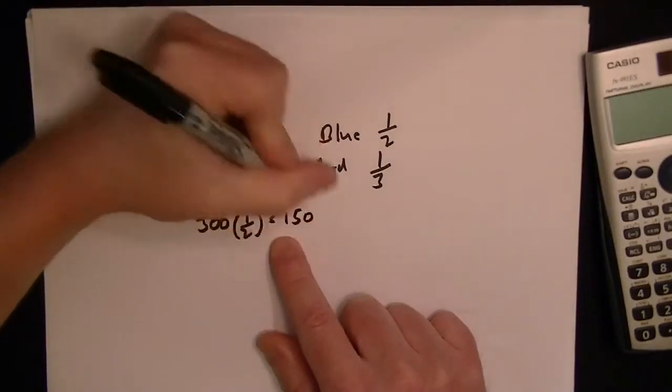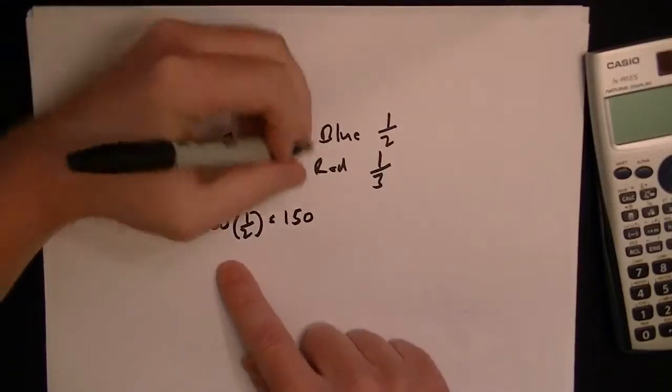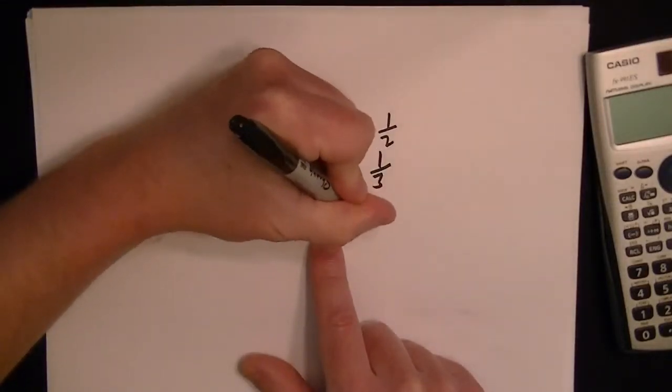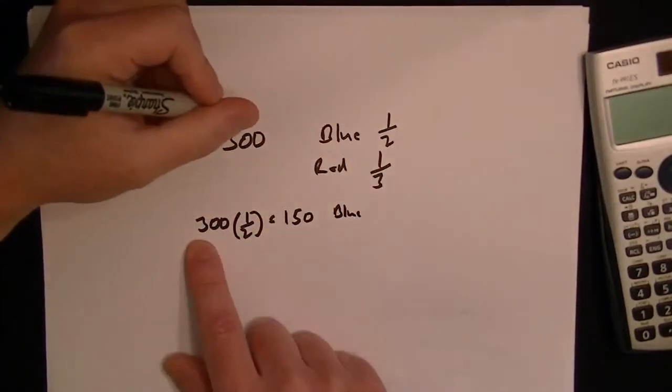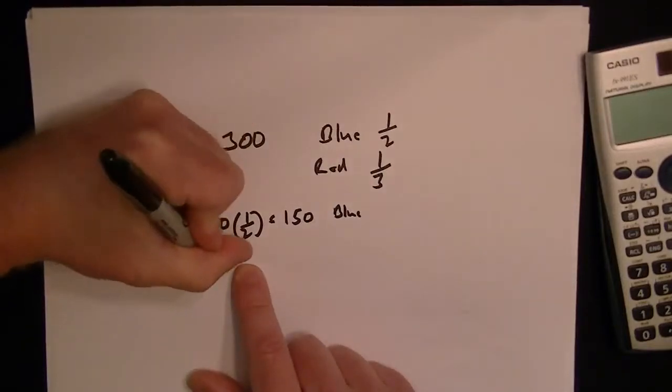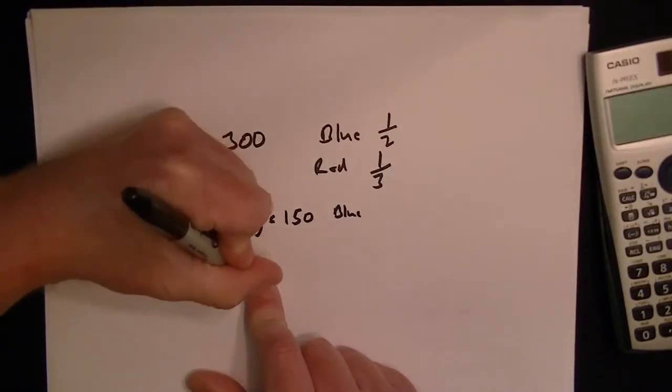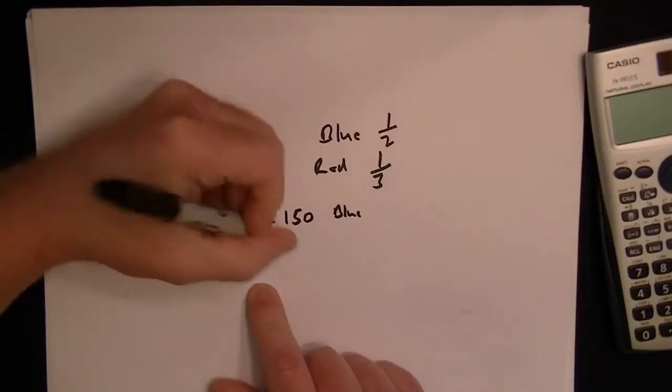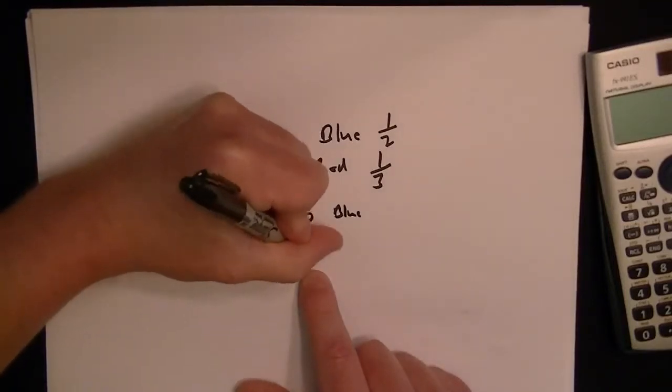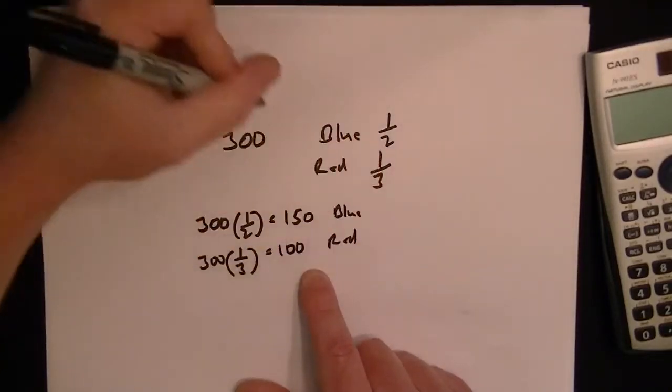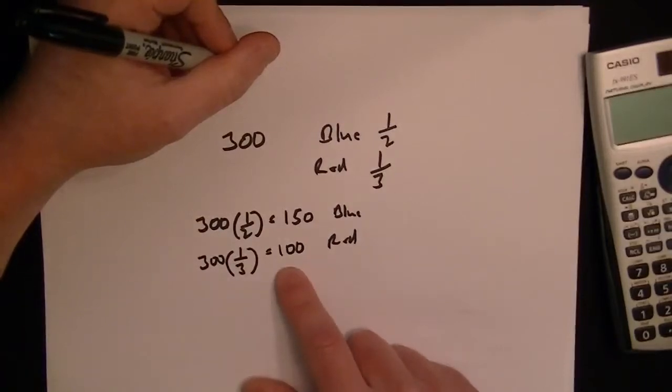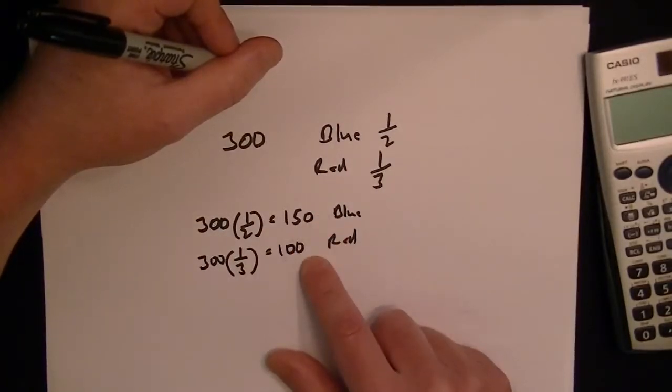150, because 150 is half of 300. So that's the blue. Then, the red was one-third, so 300 times one-third is just 300 divided by 3, which means 100 picked red. So 150 picked blue